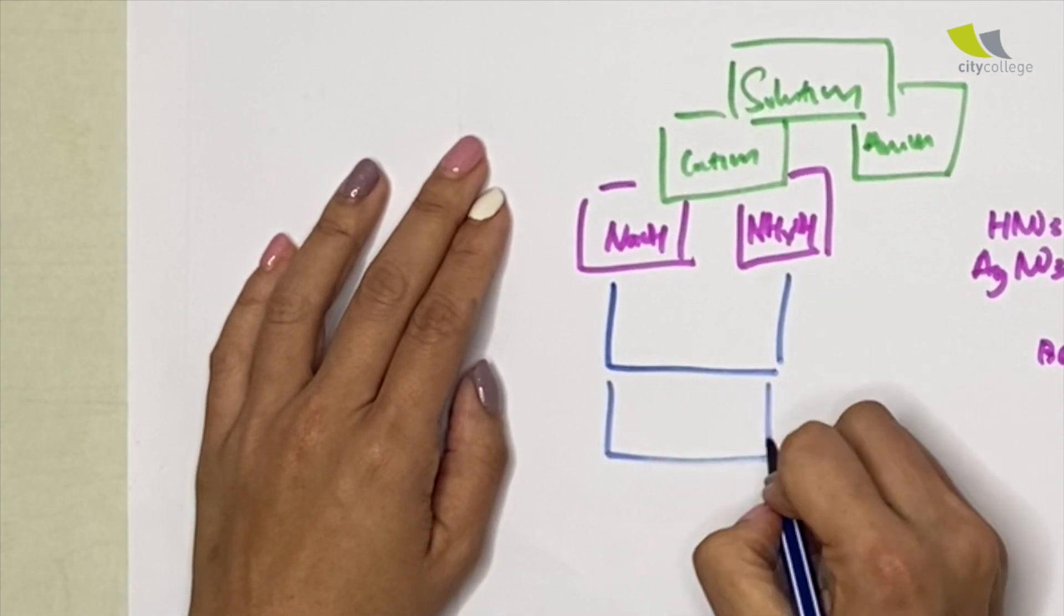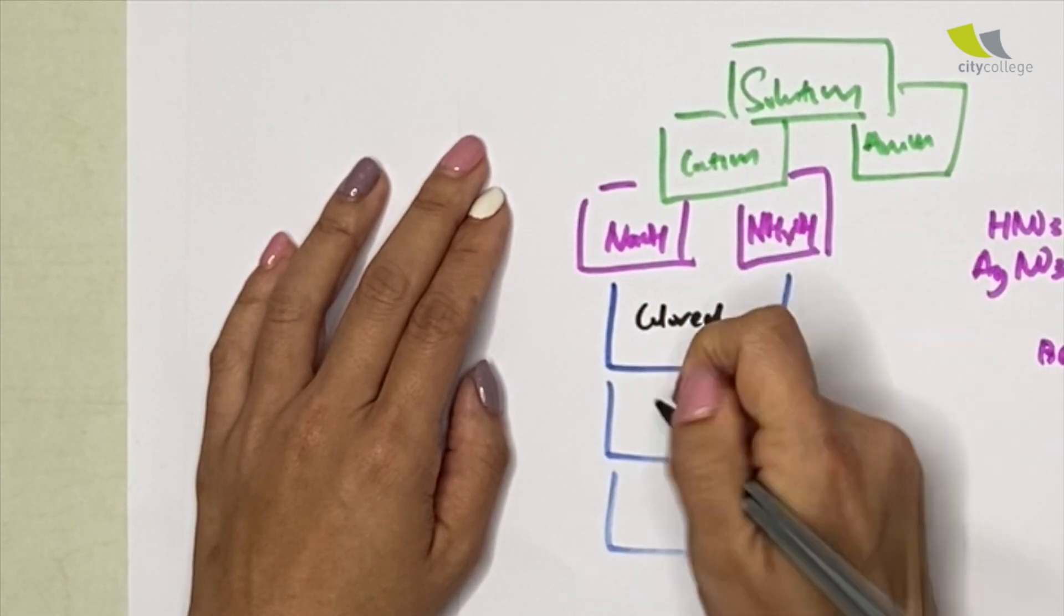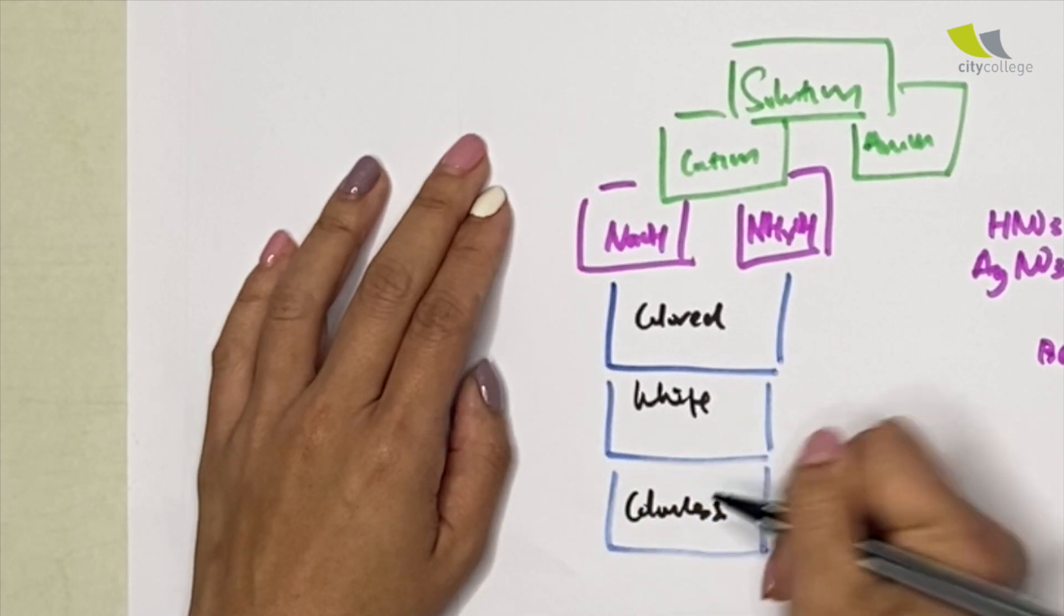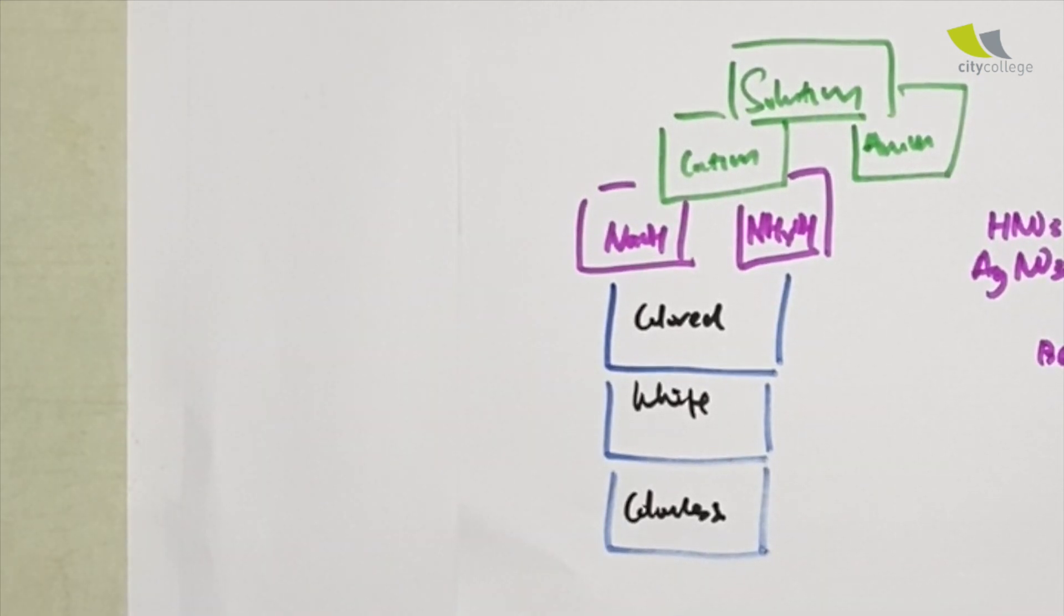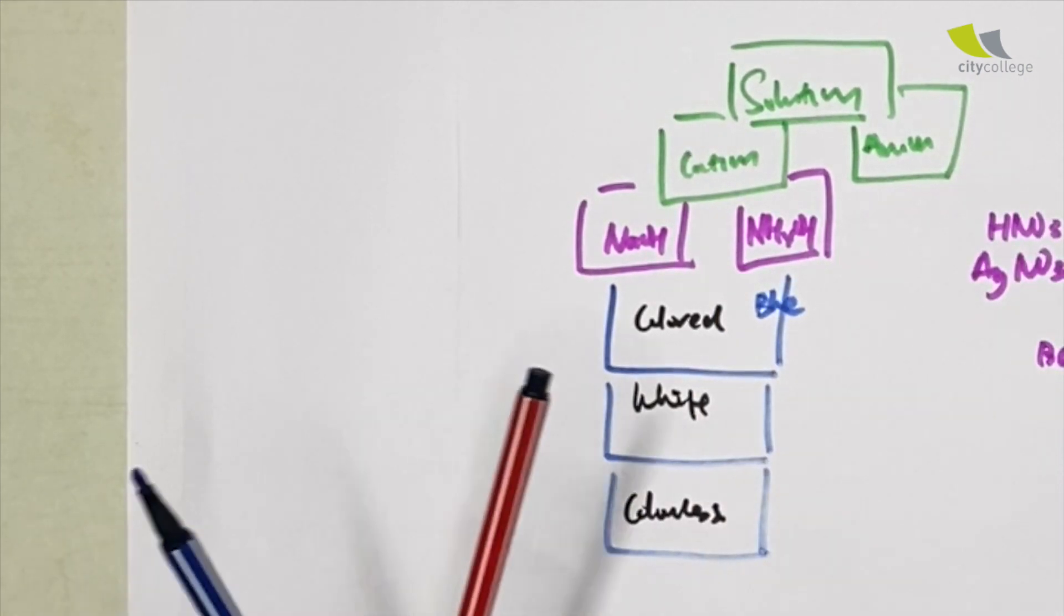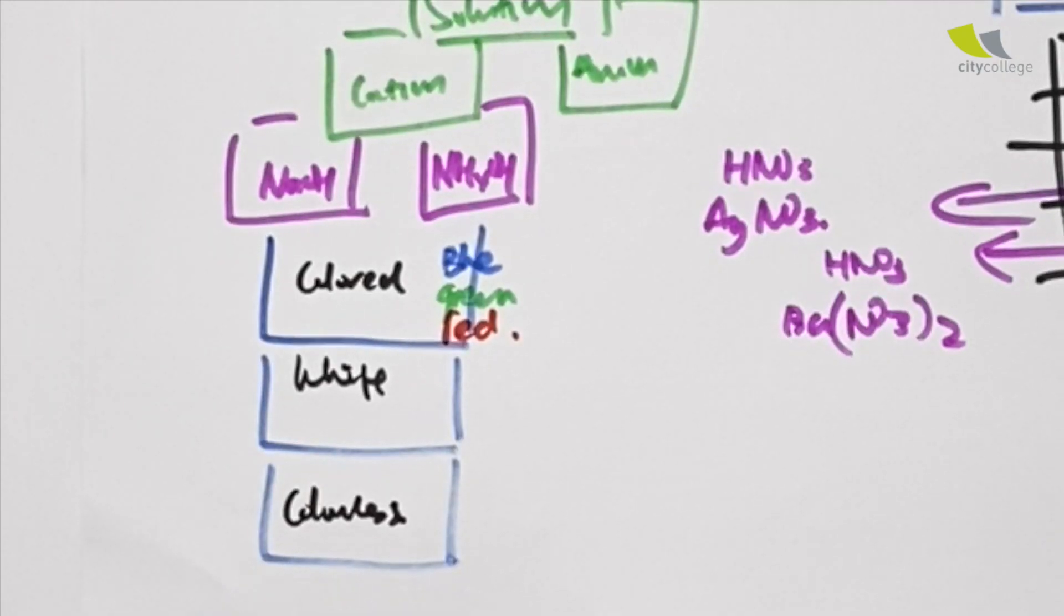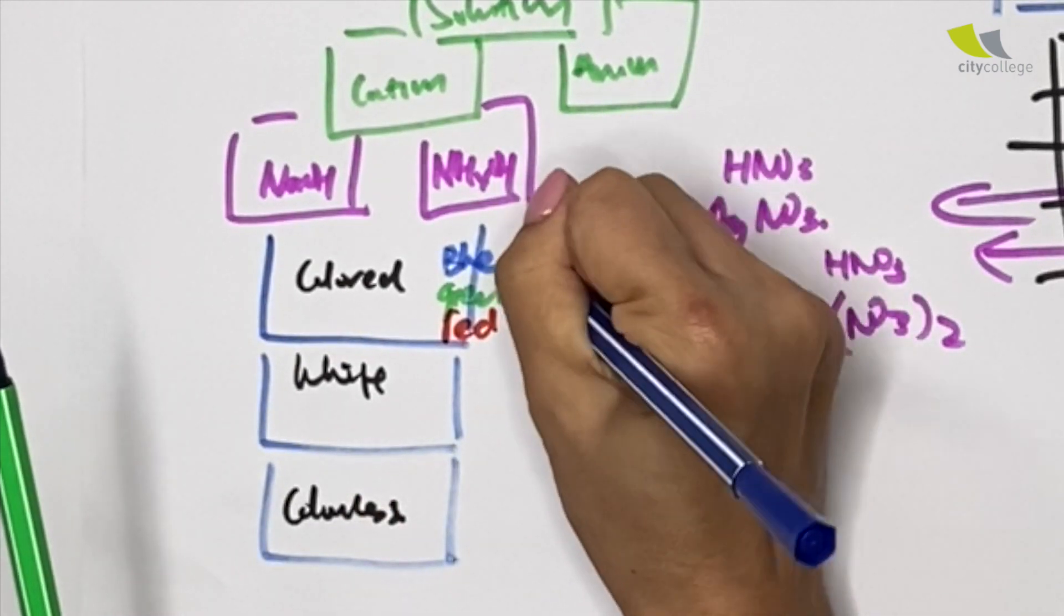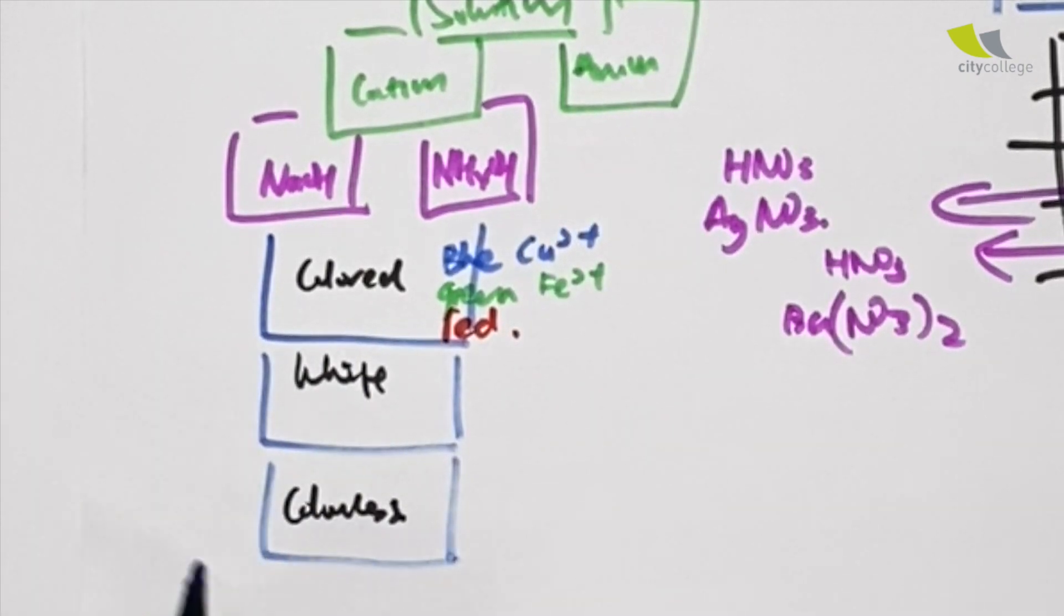So every time you see these two solutions you know immediately, hey, I know it's a test of cation. But how do I remember? Well, I separate them into three parts. Which are the three parts? I call them the colored, the white, and the colorless. Wow, suddenly becomes very simple, correct? So who are the colored ones? We have three famous colors: blue, green, and red.